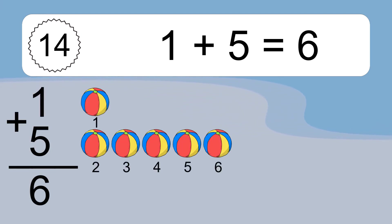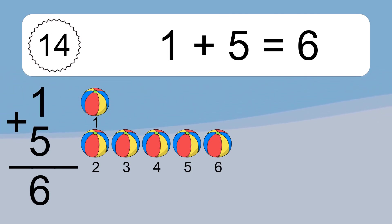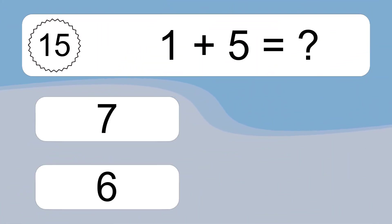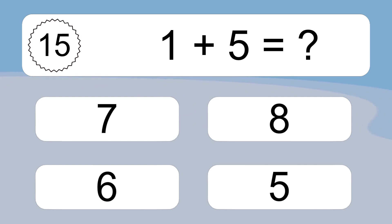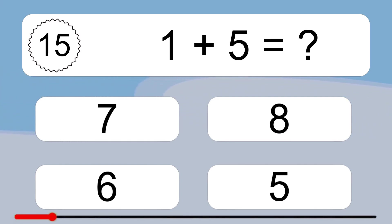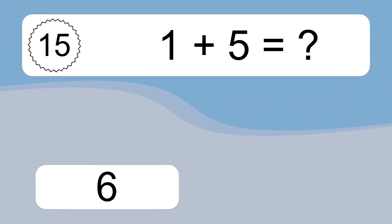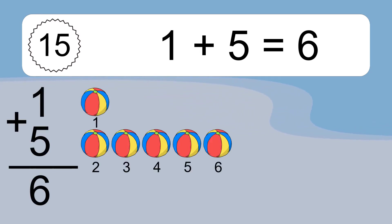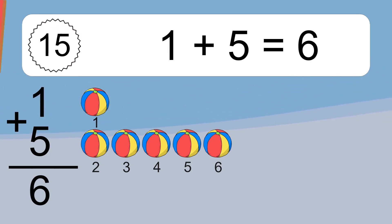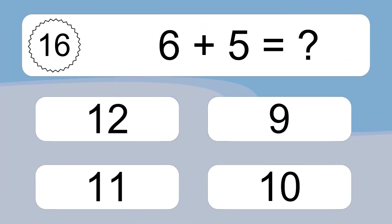1 plus 5 equals what? 1 plus 5 equals 6. Let's count it. 1, 2, 3, 4, 5, 6.